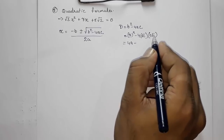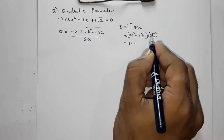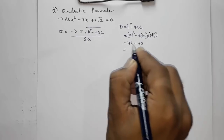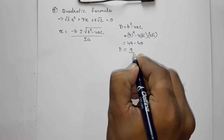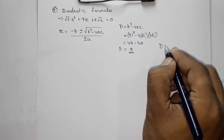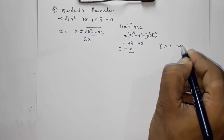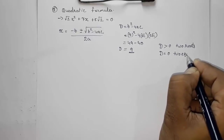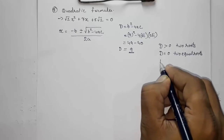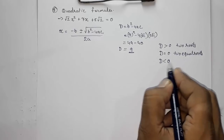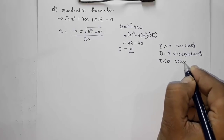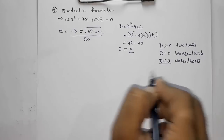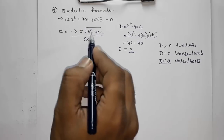D = 9, which is positive. There are three conditions: if D > 0, we get two distinct real roots; if D = 0, we get two equal roots; if D < 0, we get no real roots. Since D > 0 here, we will get two distinct roots. If D is negative, there is no need to continue solving.